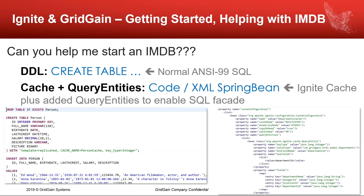However, if you want to take advantage of the broadest range of APIs — especially the computing capabilities, events, services, and machine learning — you'll want to have a full object model available to those compute platforms. In that case, using code or Spring Bean XML configuration gives us that capability.